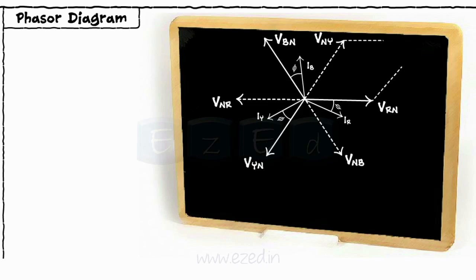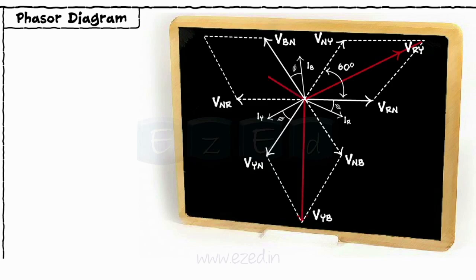Completing the parallelogram of phasors Vrn and Vny, we get the resultant as Vry which is the line voltage. Similarly, we get the other line voltages as Vyb and Vbr.